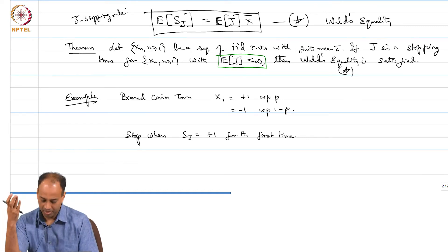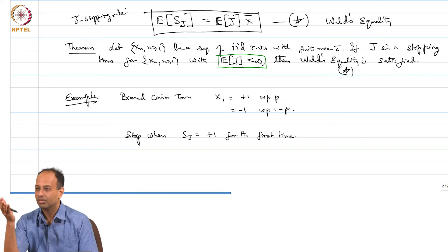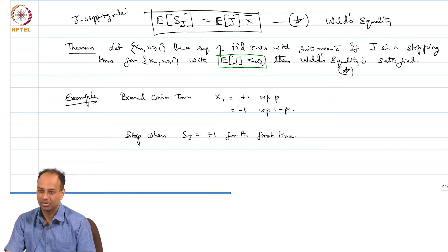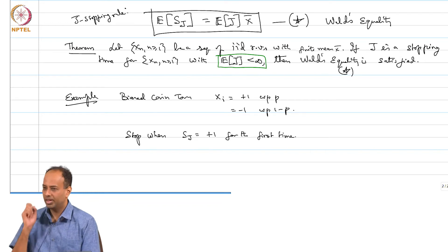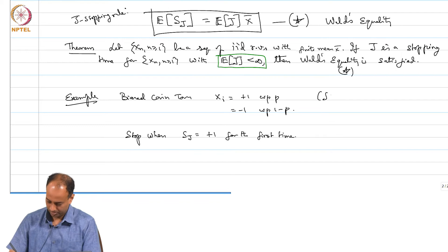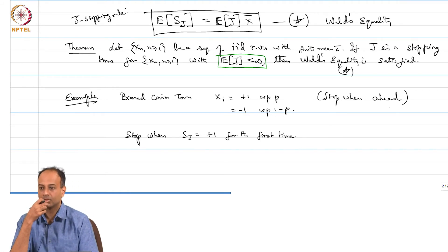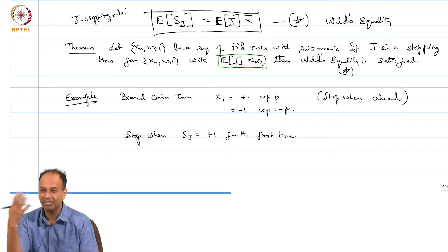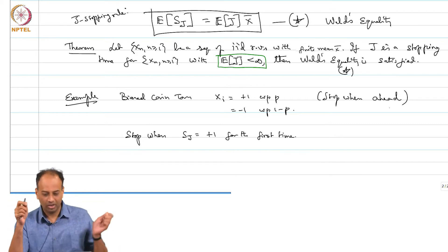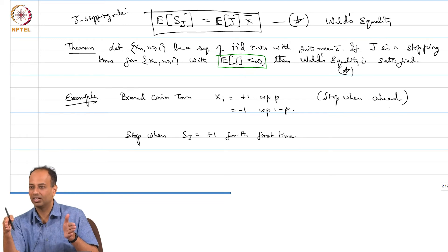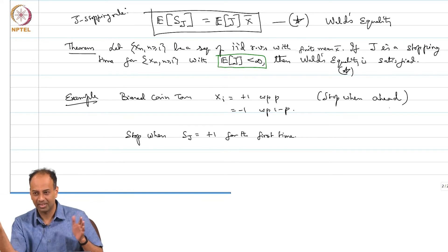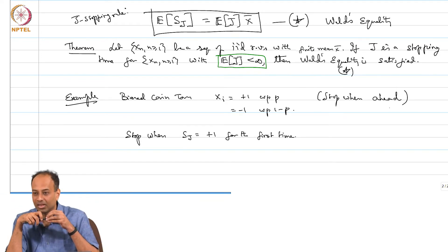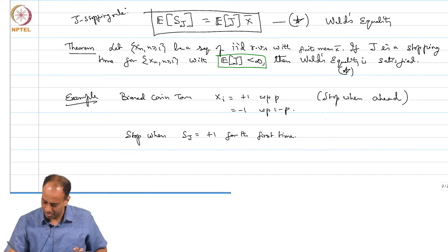He could stop in the first trial itself if x_1 turns out to be plus 1. If S_1 turns out to be minus 1, he hopes to build back up to 0 and then to plus 1. This is called the stop-when-ahead rule. The question is: is this even a legitimate stopping rule? It satisfies the condition that you do not look ahead, but is it finite with probability 1? It could be defective.